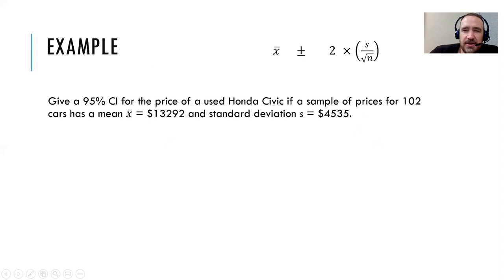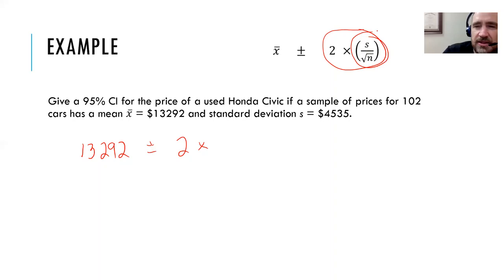Give a 95% confidence interval for the price of a used Honda Civic if a sample of prices for 102 cars has a mean x bar of $13,292 and a standard deviation s of $4,535. So let's take a look here. What we want is our x bar plus or minus what we call the margin of error, that's that 2sd idea. And so 2 times, and now the formula to help us calculate the sd, the standard deviation of the null distribution, is going to be s, the standard deviation of the sample, 4,535, divided by the square root of n, square root of 102. And so I encourage you to pause the video and try calculating this for yourself.